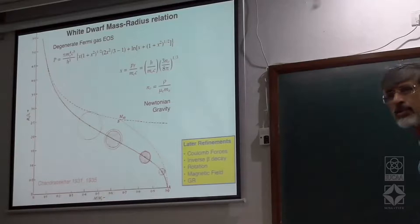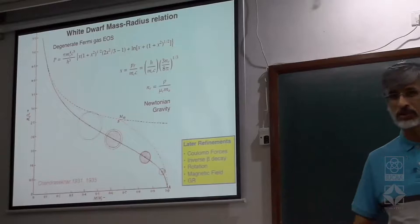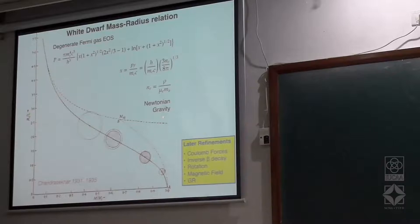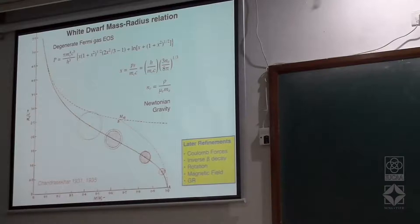The maximum mass for mu_e equal to 2 turns out to be 1.4 times the mass of the Sun, and it goes as mu_e squared — so if mu_e were 1, you get 5.7 solar masses. What happens if the configuration has a mass larger than that? Then clearly electron degeneracy pressure is no longer sufficient to support such a configuration.